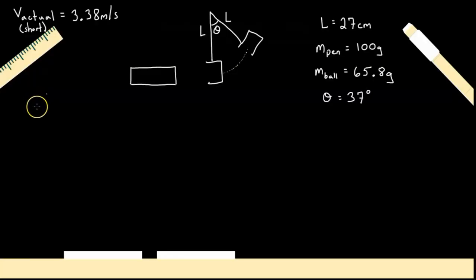All right, so let's solve this ballistic pendulum problem. So what we have here is our projectile launcher that launches a ball with some initial velocity, let's call it v1. Then the ball gets lodged into our pendulum, and together they move with some velocity v2.